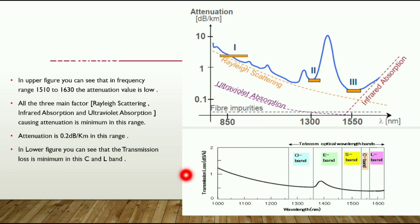Here you are seeing the transmission loss is also very low. Transmission loss is very low in the C band and L band. These two bands are most important bands which are used in the DWDM system for traffic carrying. In the upper figure you can see that in the frequency range 1510 to 1630 the attenuation value is low. The attenuation is 0.2 dB per kilometer in this range.